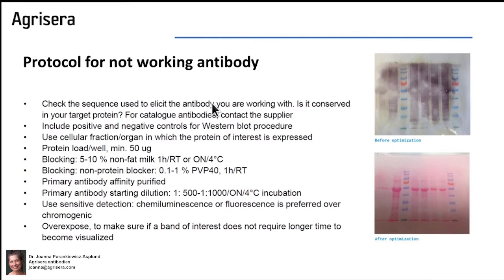For some antibodies, the type of membrane will have an importance. As you saw, load per well can have an importance, as well as blocking and the type of blocker. Also, if an antibody is to a protein of low expression, it most preferably should be affinity purified.